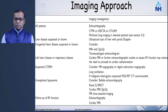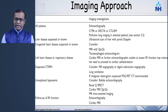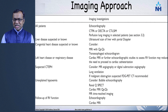Many cases come to our institute labelled as idiopathic pulmonary arterial hypertension, meaning imaging was performed but no diagnosis was established. In about 60 to 70 percent of such cases, we actually do find a cause of pulmonary hypertension, and correct therapy can be instituted.